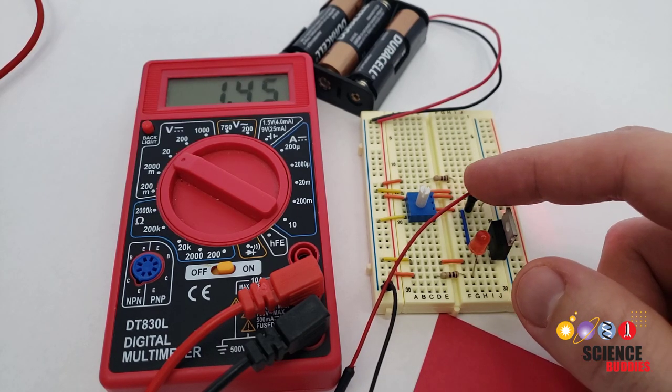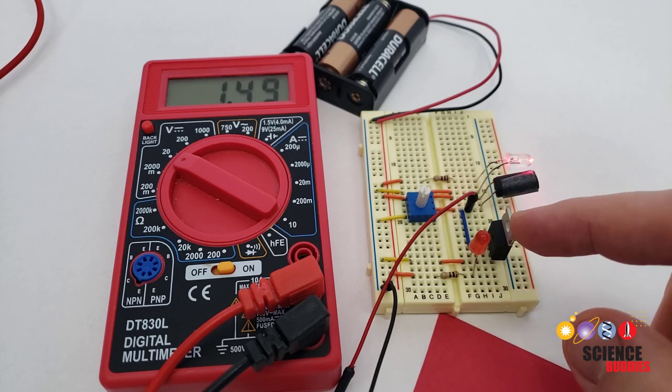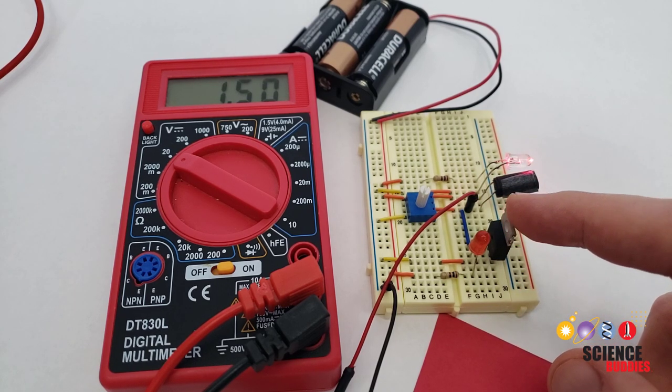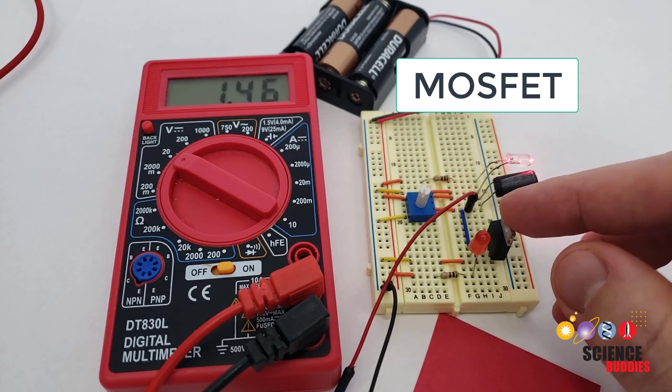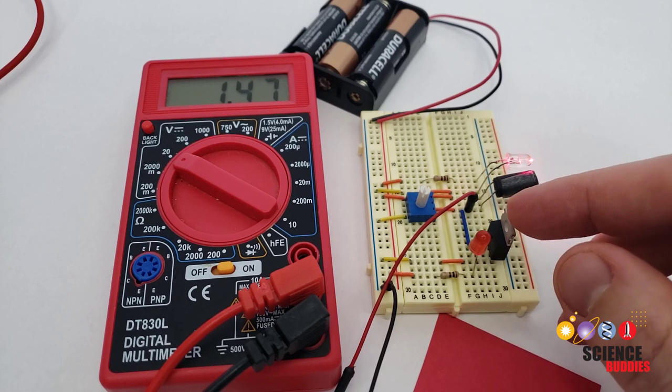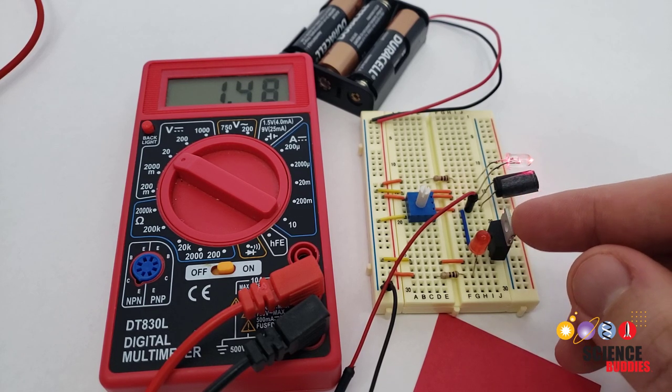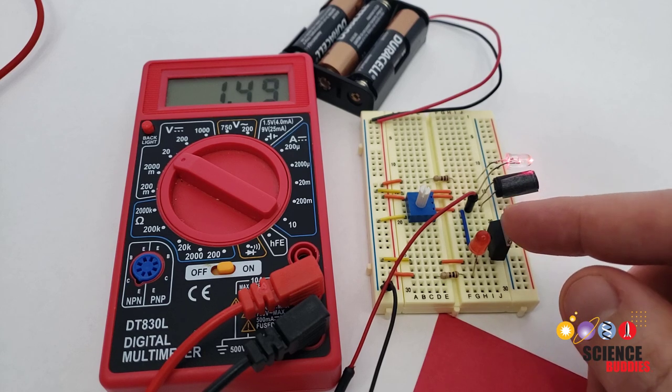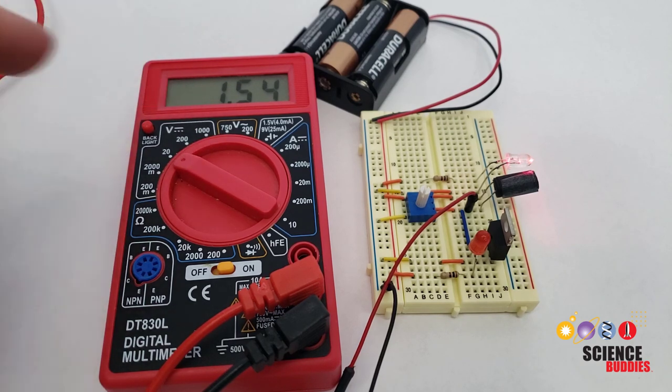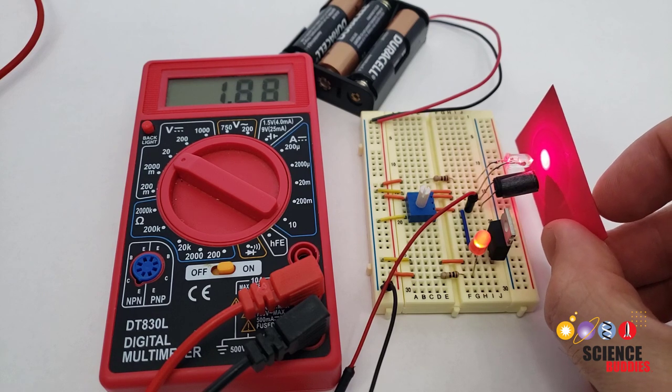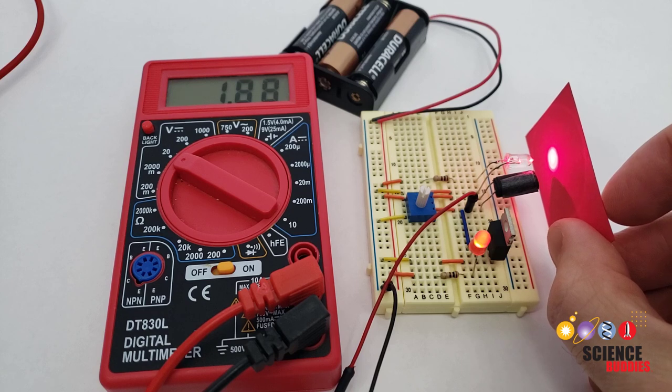We then have the output of the voltage divider connected to the input of a transistor. This type of transistor is called a MOSFET and the input pin is called the gate. So, long story short, this is a bit of a simplification, but once the gate voltage gets high enough and exceeds something called the gate threshold voltage, the MOSFET will turn on and allow current to flow through the LED. So we can see right now when the gate voltage is only about 1.5, that is too low to turn the LED on. But when I hold the red paper in front of the LED and photoresistor, that voltage goes up to about 1.8, 1.9, and that is enough to turn on the LED.